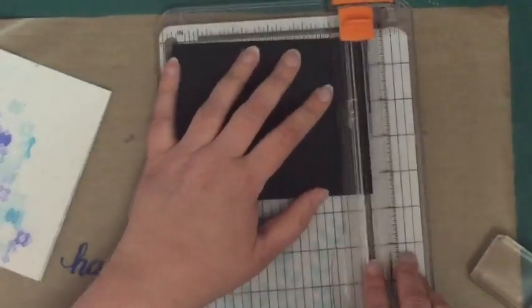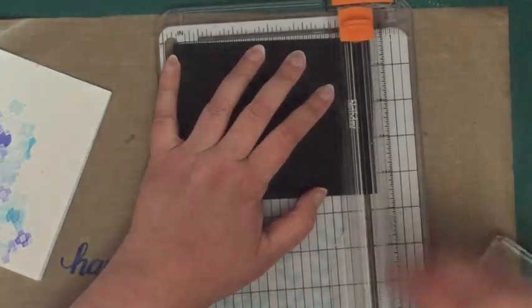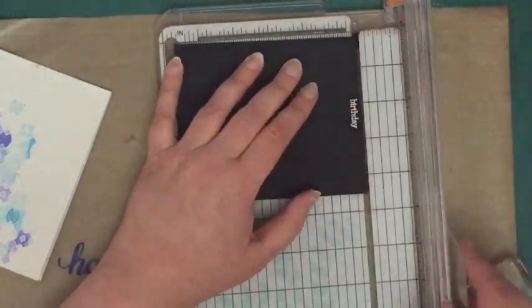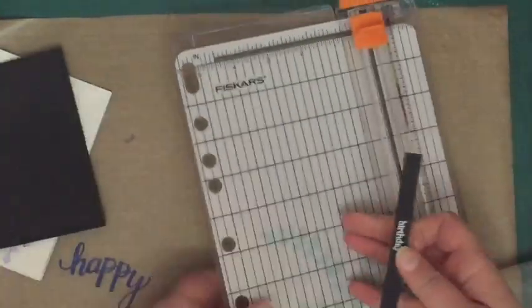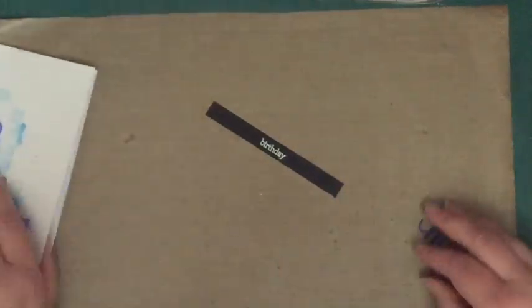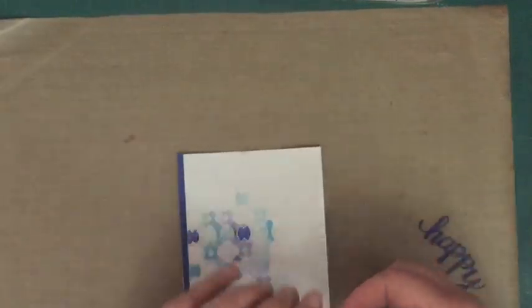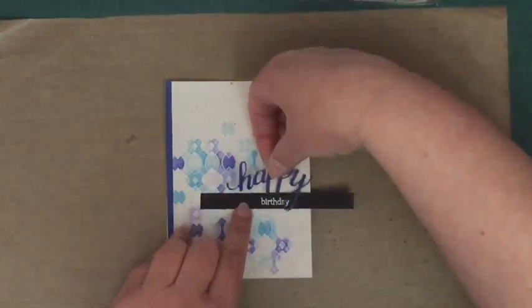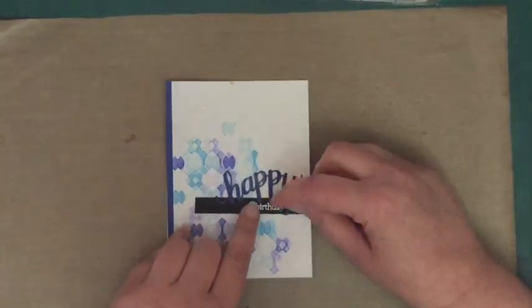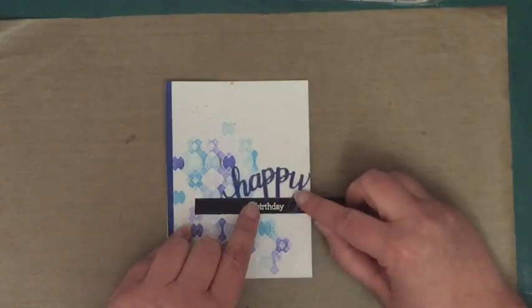Now I never ever stamp straight, I'm just terrible for doing that. So I've just stamped this and then I'm going to cut it down and make it straight when I cut it down. So I made sure I had plenty of room between the edge of the cardstock and where I've stamped the sentiment so that I could make it nice and straight.